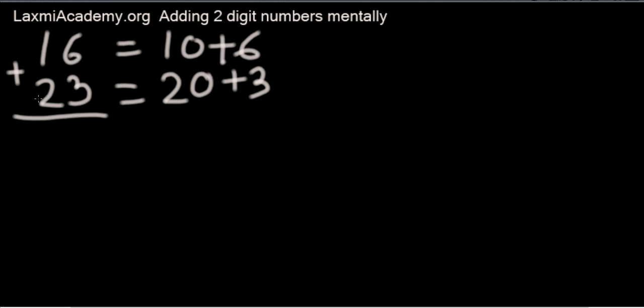Same thing applies for 23. The value of 2 is 20 because it's in the tens place and the value of 3 is 3 because it's in the units place. You're going to start your addition from here: 10 plus 20 equals 30, plus 6 equals 36, plus 3 equals 39.